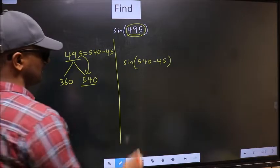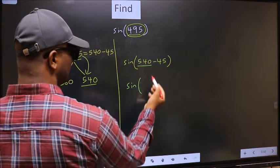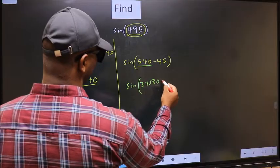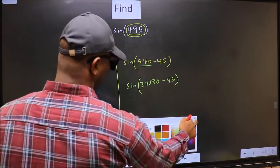Next, sin. In place of 540, now we should write 3 into 180, minus 45.